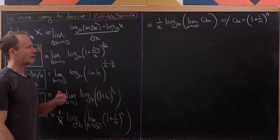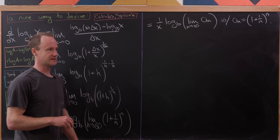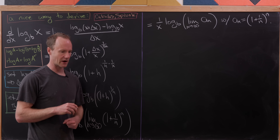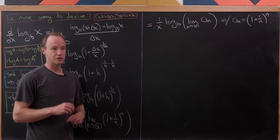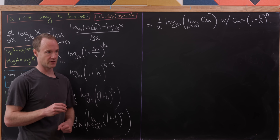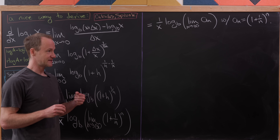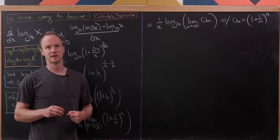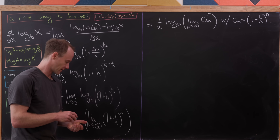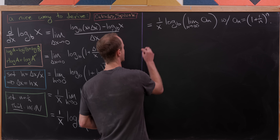You might already know what that limit is, but let's pretend we don't and calculate it. The standard approach would be to use L'Hôpital's rule after taking a logarithm, but that requires knowing the derivative of the logarithm — which we don't have yet. So instead, we'll show this limit exists and then define it to be a number. As you'll see, that number will be e.